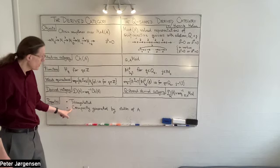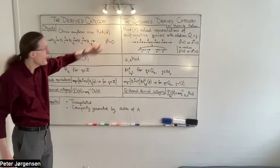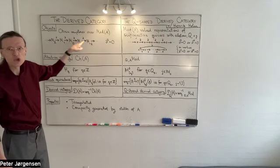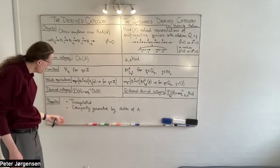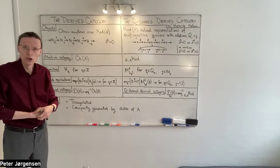So it's triangulated and it is compactly generated by what I call the stalks of A. A stalk of A would be what I got if I took A, the ring, and placed it in a single degree and put zeros elsewhere. And that's a stalk of A. And these objects are compact generators of the category. And there's an extensive theory of compactly generated triangulated categories. And you can say many, many, many nice things about them.